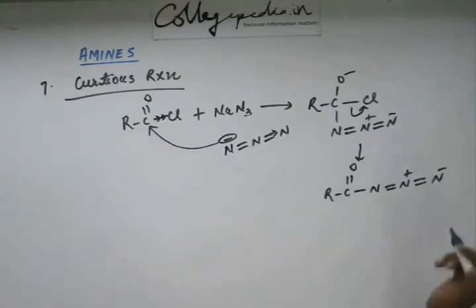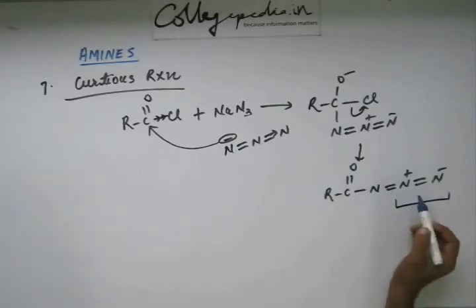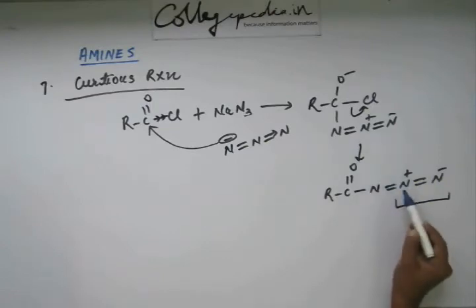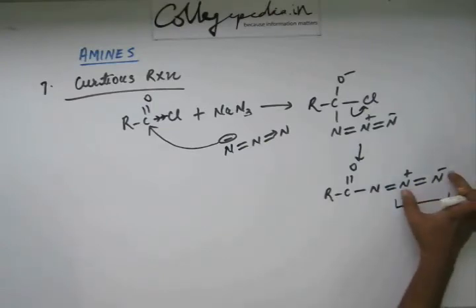Now you have to facilitate the formation of this N2 gas. How are you going to facilitate this? Two nitrogen has already double bond, so you have to generate one more bond between them. You can generate one more bond by developing a plus charge on this carbon because this N minus and this N plus will form a bond.